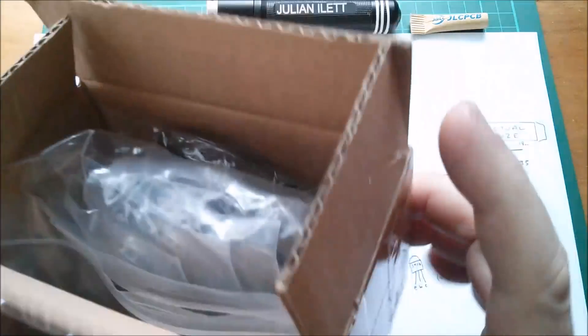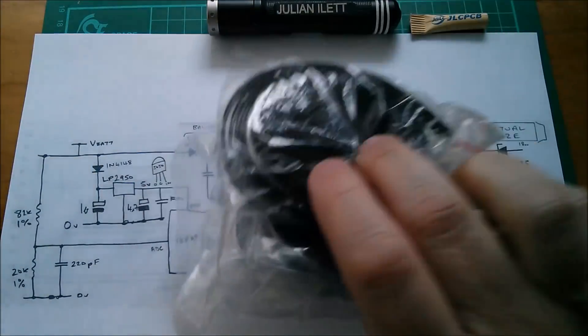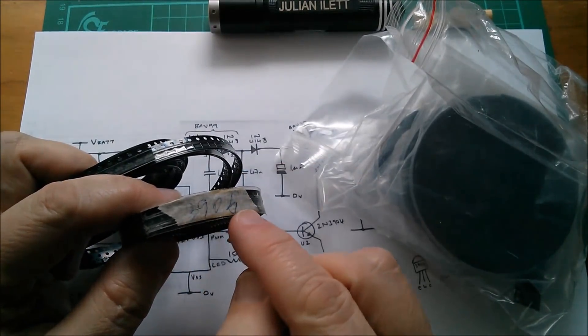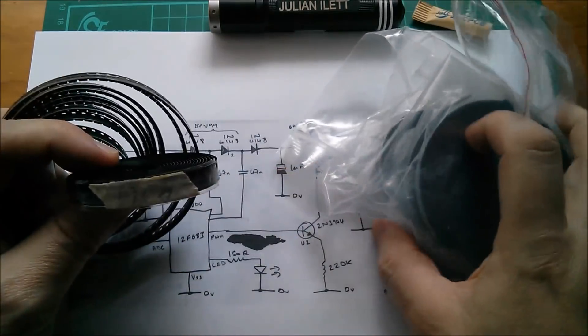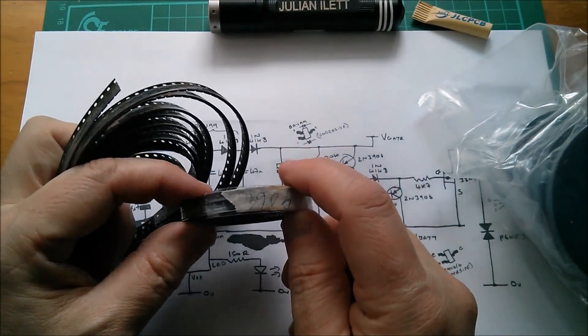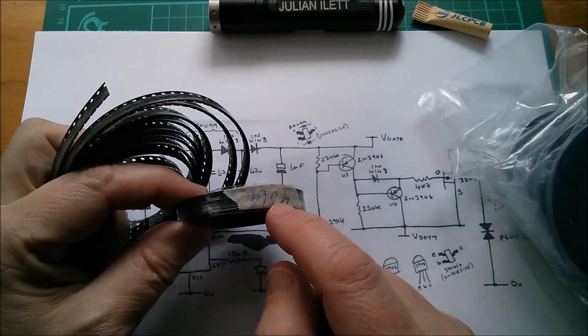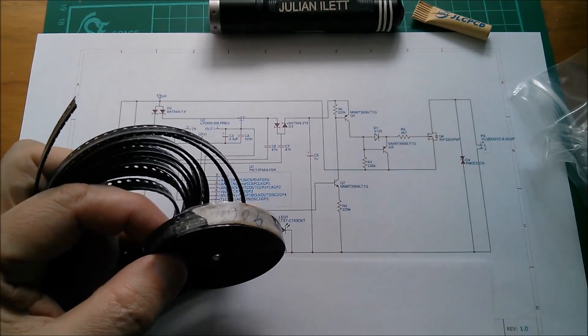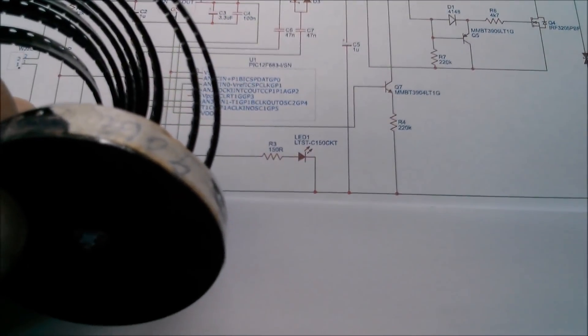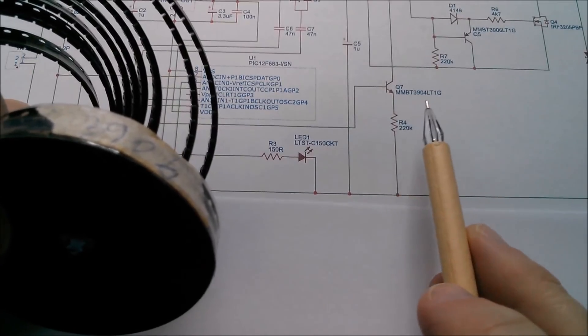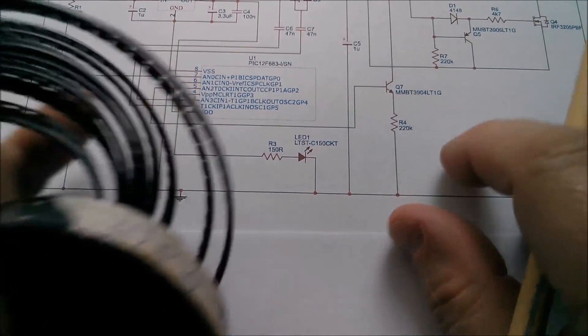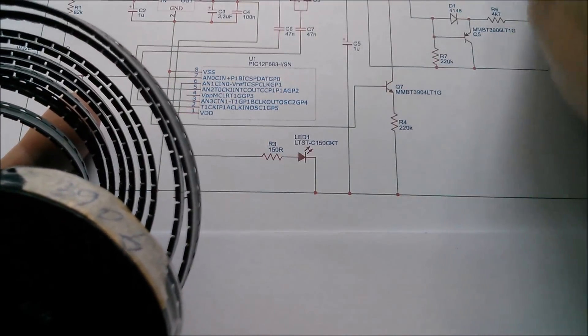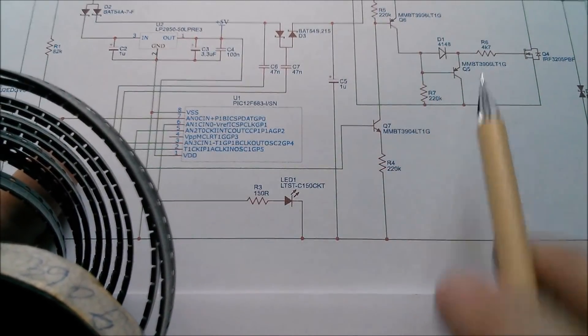Right, so in the SMD semis box, we've got this stuff, let's have a quick look at that. Right, this one says 3906, I'm pretty sure these are the surface mount versions of the 2N3906, and I think they're called MMBT3906. I think that's on this diagram, yeah, so if we can see that, zoom in a little bit, yeah, so this one is the MMBT3904LT1G, whatever that means, and the PNP is MMBT3906, and there are two of those, there's one up there and one there. Right, the 3906 just says 2A on it.